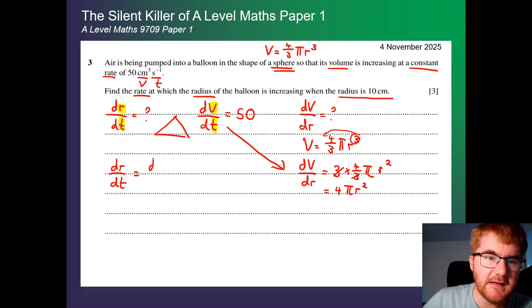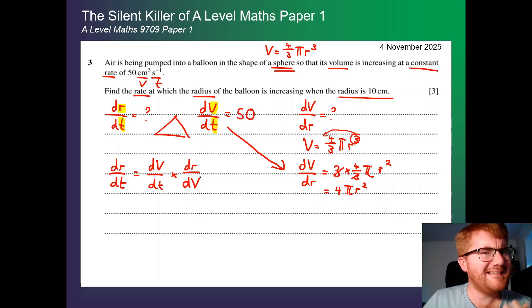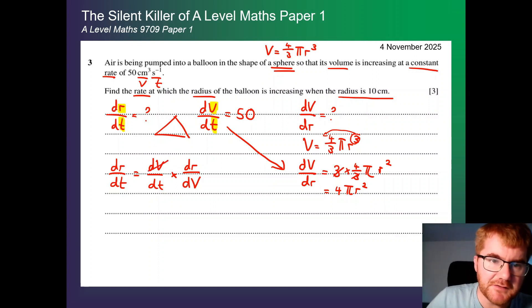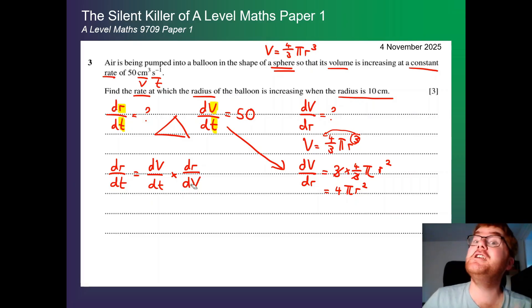So here, I'm going to write down dv by dt times dr by dv. Now, where does this actually come from? So notice here, with normal fractions, if we think of this like a fraction, notice that this would cancel top and bottom. And we're actually left with what we're looking for, dr by dt. So we're kind of unsimplifying the fraction like you do probably a few years ago when you're doing an IGCSE. So I've made an expression that cancels down to dr by dt.